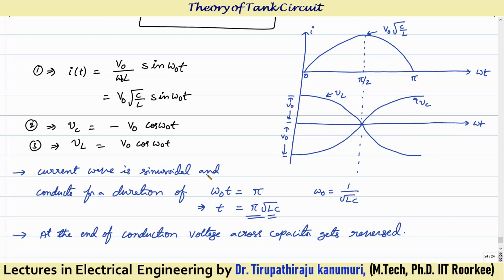The current wave is sinusoidal and conducts for a duration of ω₀t = π, or t = π√(LC). At the end of the conduction period, the voltage across the capacitor gets reversed. This tank circuit will be useful in analyzing the different commutation techniques which we are going to discuss in coming lectures. I hope the concept of the commutation circuit and its requirement is clear. If you have any queries, you can leave your comments in the comment section below. Thank you very much.